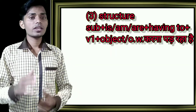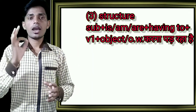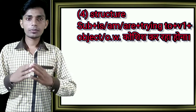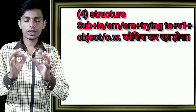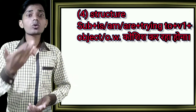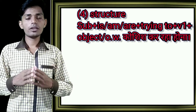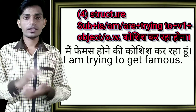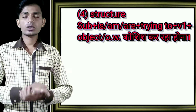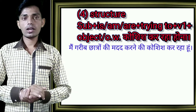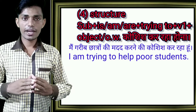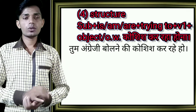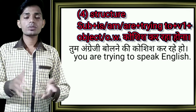Our next spoken English structure is used when the subject is trying to do something or become something. For example: I am trying to get famous. I am trying to help poor students. You are trying to speak English. Such sentences are made using this structure.